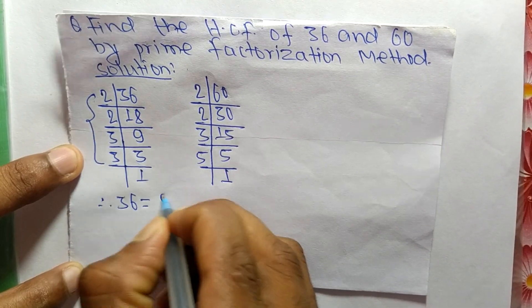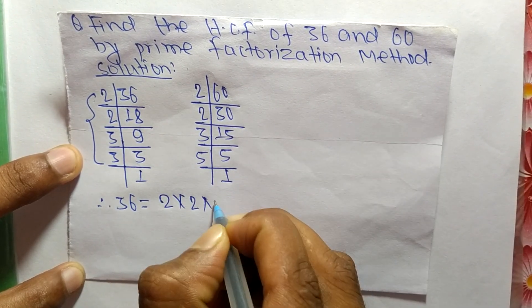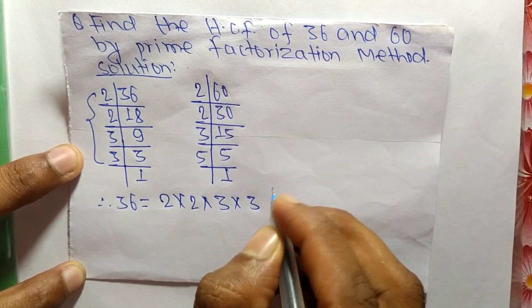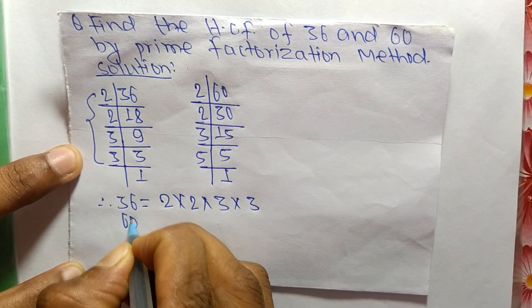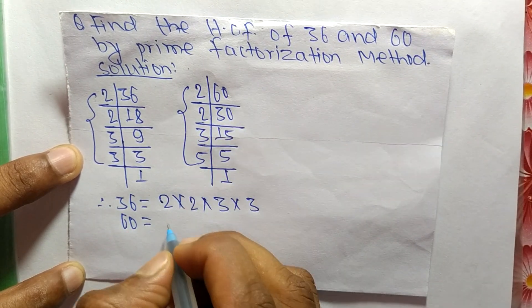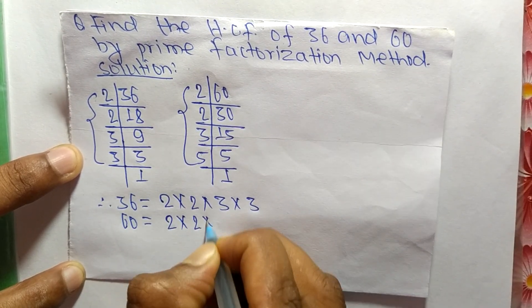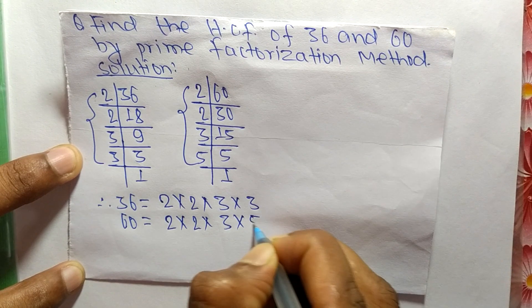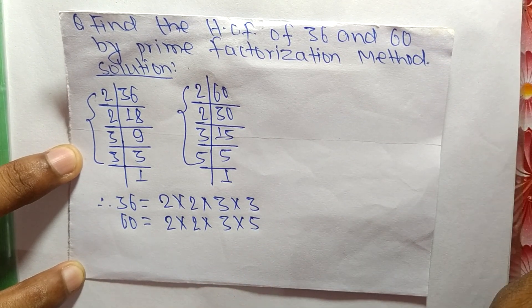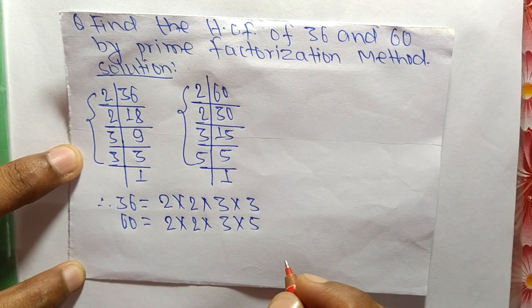From this part it is 2 times 2 times 3 times 3. Likewise, 60 is equal to, from this part, 2 times 2 times 3 times 5. So now we have to find out the common factors in these prime factors.